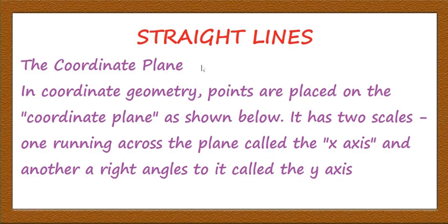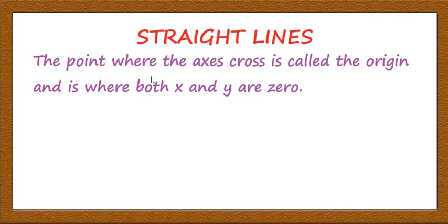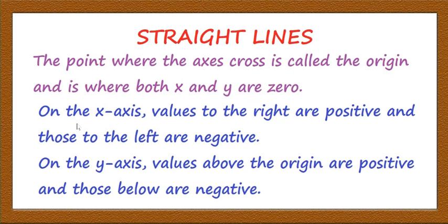Now, the introduction to the straight line in the coordinate plane. The coordinate plane has two axes: one running across the plane called the x-axis, which is the horizontal line, and another at a right angle to it, which is the vertical line called the y-axis. The point where the x-axis and y-axis cross each other is called the origin, and at that point both x and y are zero.